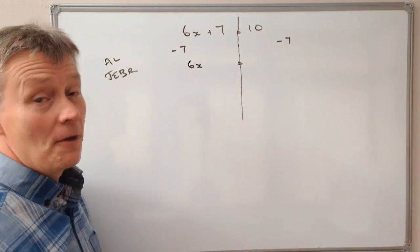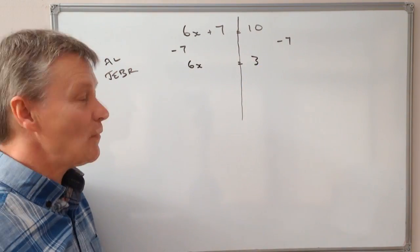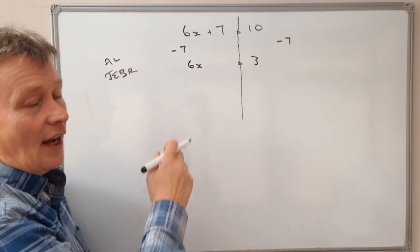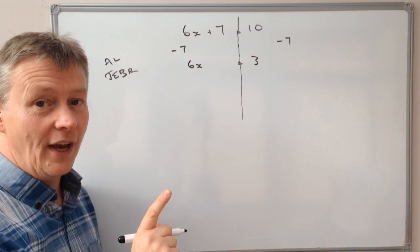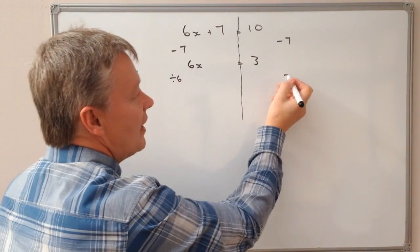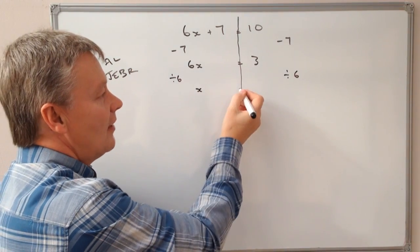On this side, I've got 10 minus 7, which is going to give me a value of 3. OK, next thing is, I've got 6 values of x, and I need to get just one value of x. So to get rid of that, I'm going to divide this by 6. Because if you divide 6 by 6, I just get 1, so I'm going to get x on its own.